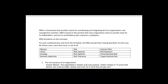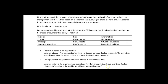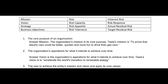The key term is 'core purpose,' and the core purpose of any organization is its mission. Every organization has a mission. Tesla's mission is to prove that electric cars could be better, quicker, and more fun to drive than gas cars. Number two: the organization's aspirations for what it intends to achieve over time — that's its vision. Tesla's vision is to accelerate the world's transition to renewable energy.